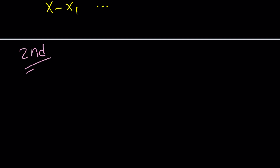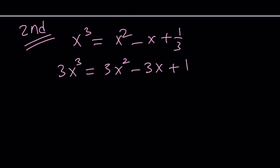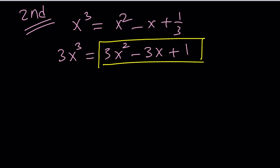Now we're going to do the second method, because I think the second method is really, really cool. Let's see how that proceeds. The first thing I'm going to do is get rid of the one-third, and I want to multiply. I told you this was a special cubic equation — why is it special? You'll see in a little bit. Hopefully, if you look at this expression carefully, you're going to recognize this piece here.